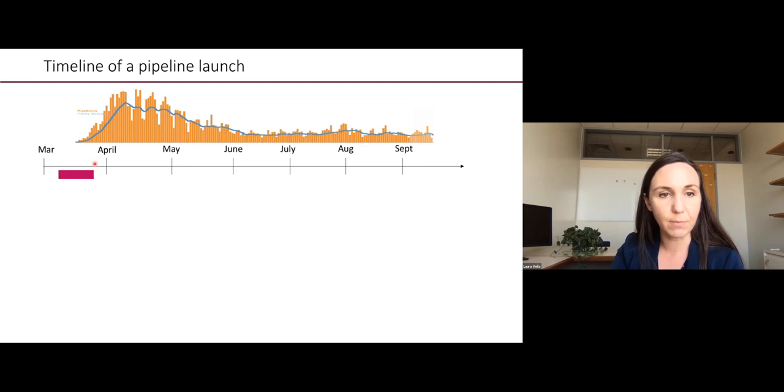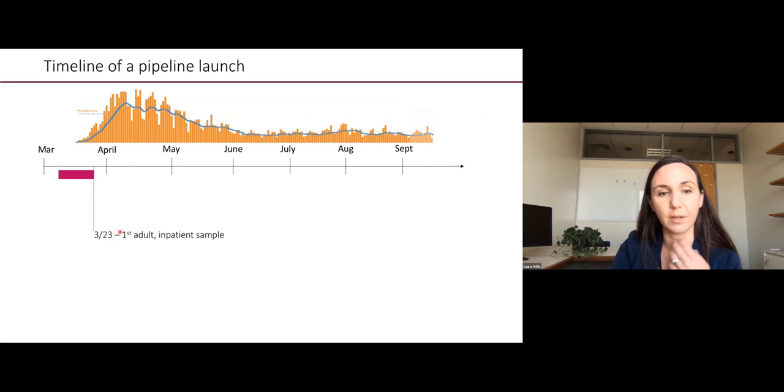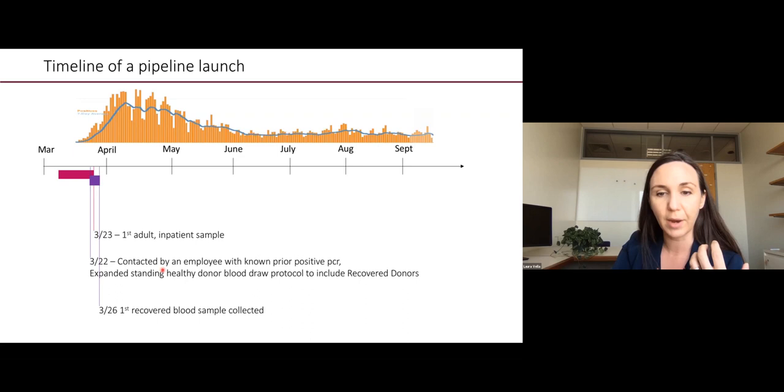What I'm showing you here is a timeline of our pipeline launch. This began as a massive effort at the University of Pennsylvania. Many groups were involved. What you're seeing here in orange is the case counts that happened during the first wave in Philadelphia, where we are located. In this magenta bar is when many of us put our heads together and began rapidly planning how we were going to learn as much as we could to be able to respond to patients.